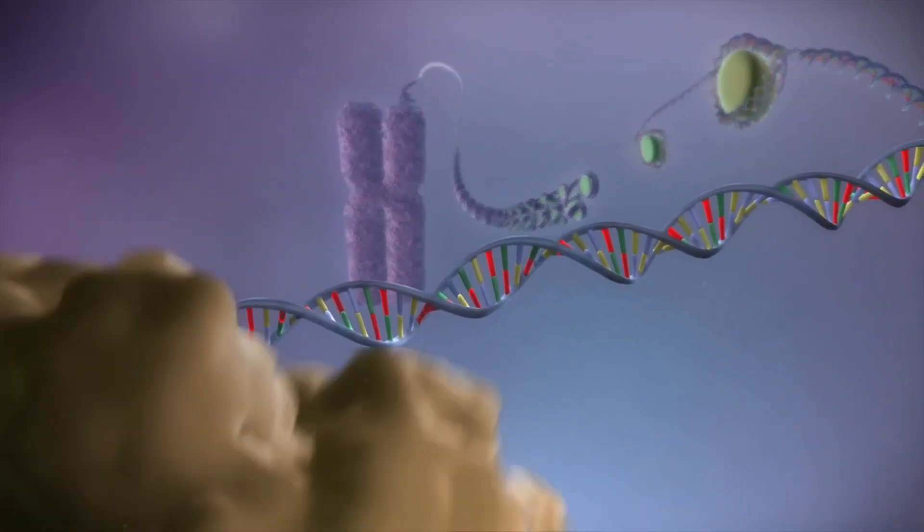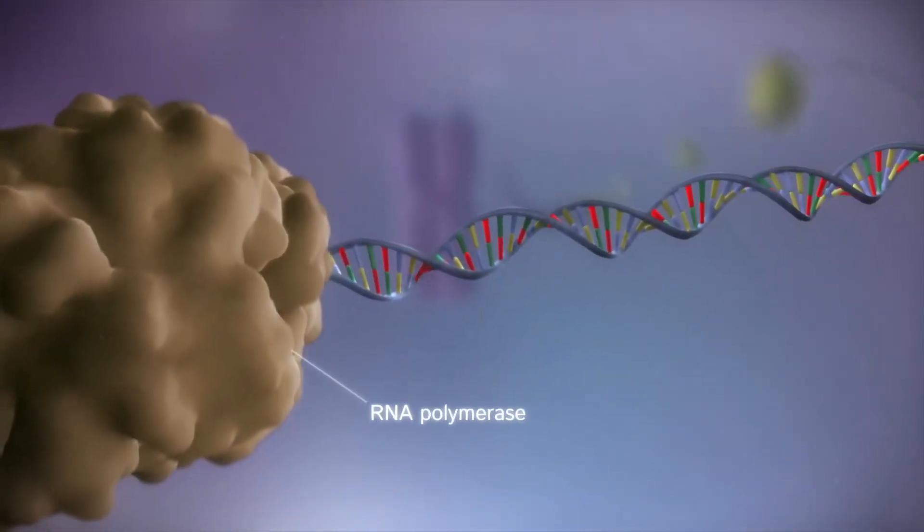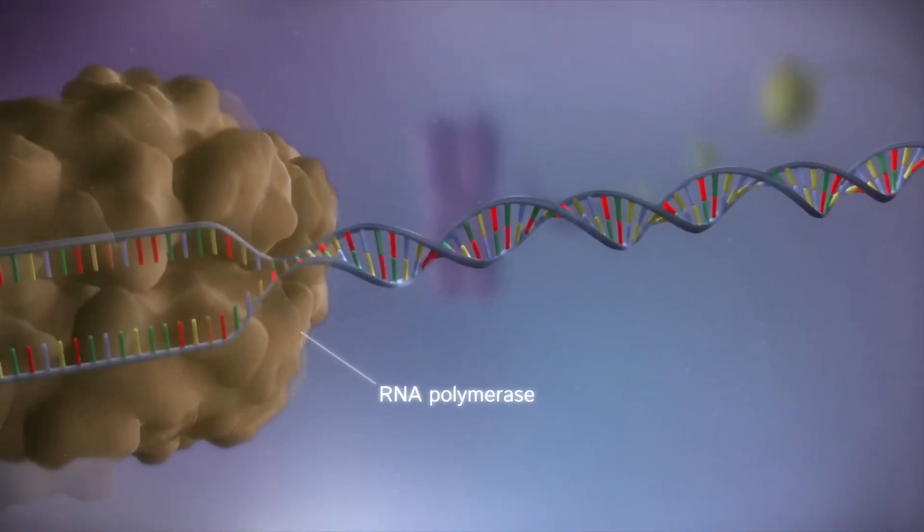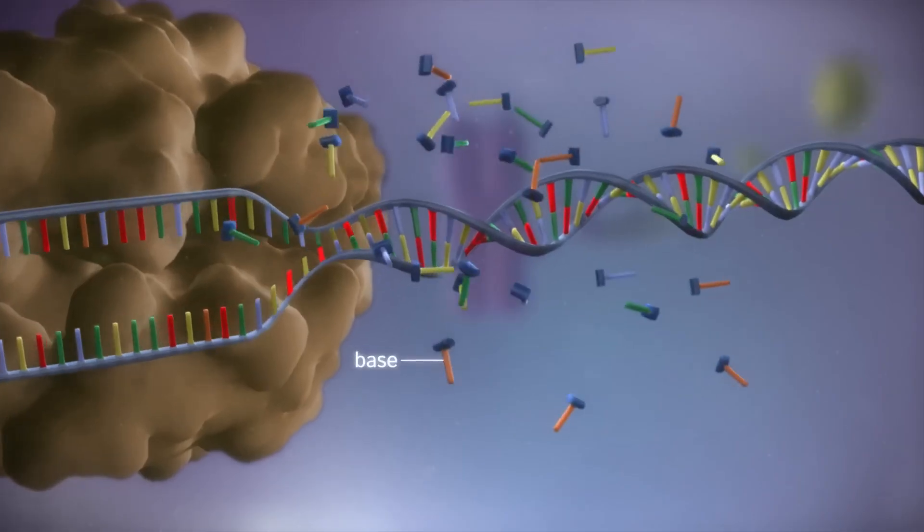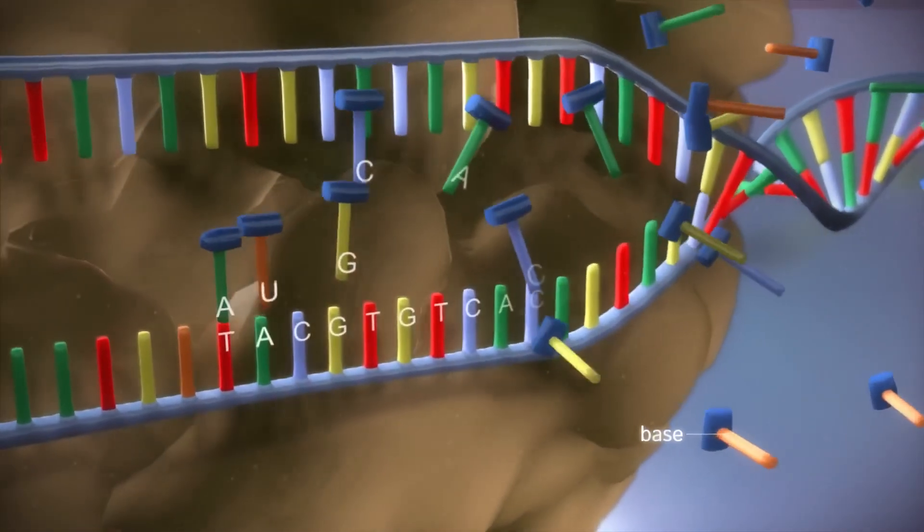When a gene is switched on, an enzyme called RNA polymerase attaches to the start of the gene. It moves along the DNA, making a strand of messenger RNA out of free bases in the nucleus.